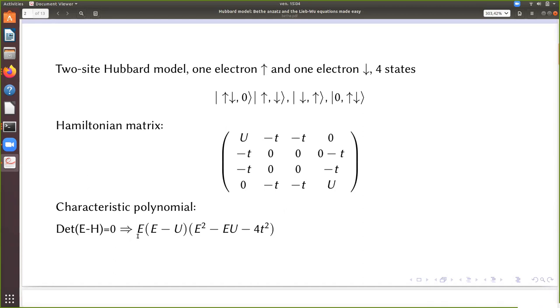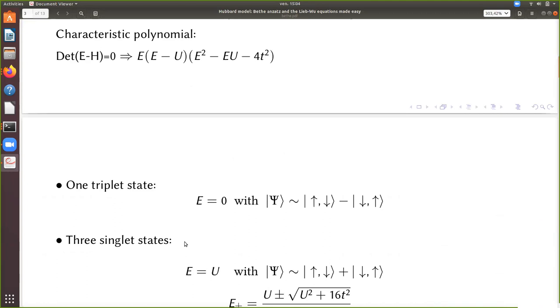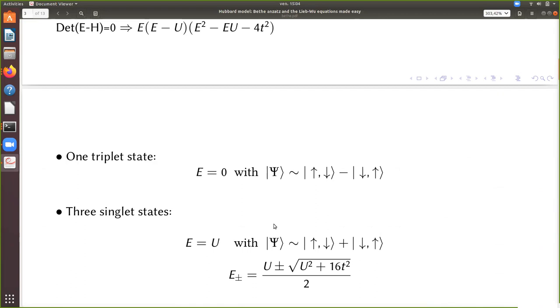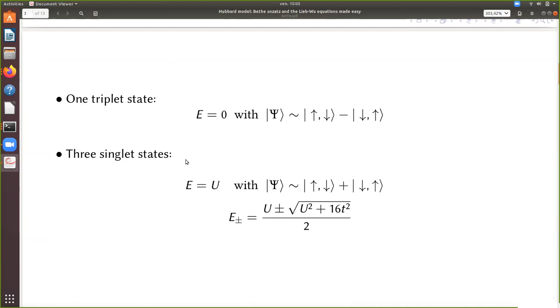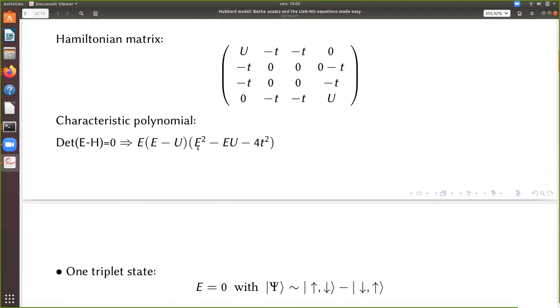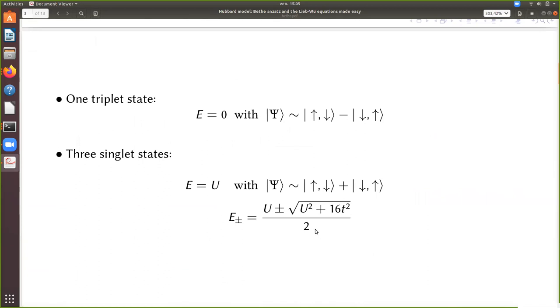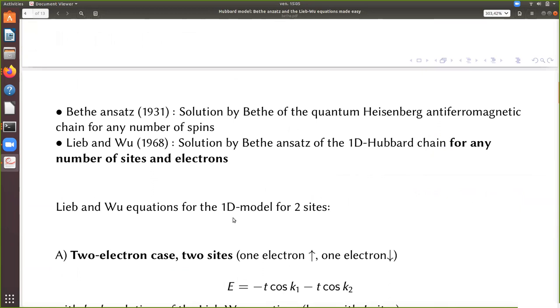The characteristic polynomial to compute the four energies is easy to find. You have four solutions. One triplet state, which essentially is up down minus down up, with the signs minus, in order to have a triplet. And the energy is equal zero here. You have an energy of U here, which is a singlet combination. And you have two non-trivial states, which are given the energies given by this polynomial, second order.